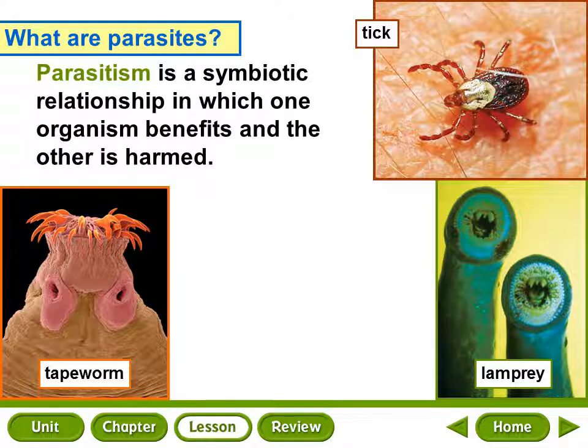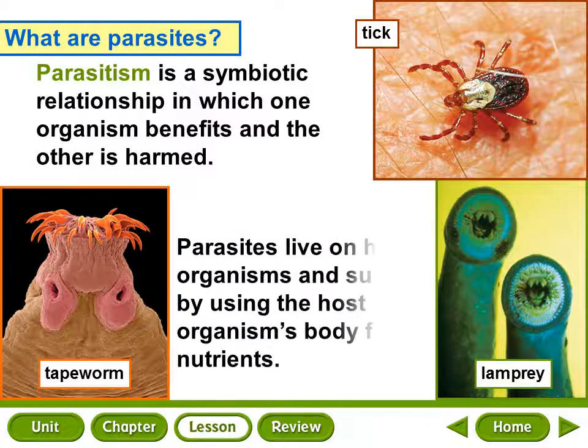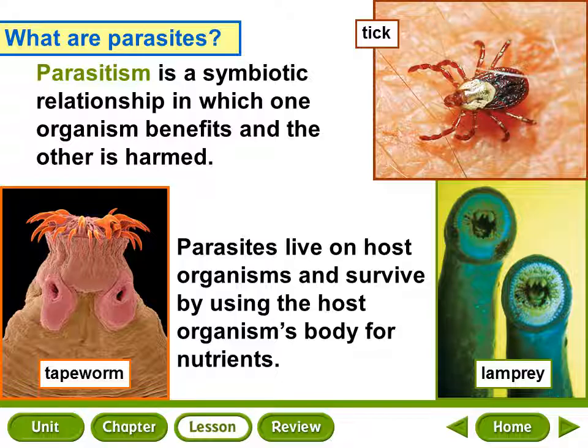Parasitism is a symbiotic relationship in which one organism benefits and the other is harmed. As shown in the photo of the tick in the upper right-hand corner — the tick benefits from sucking blood from the host, your dog or cat. However, the dog or cat is harmed from this relationship. Parasites live on host organisms and survive by using the host organism's body for nutrients.